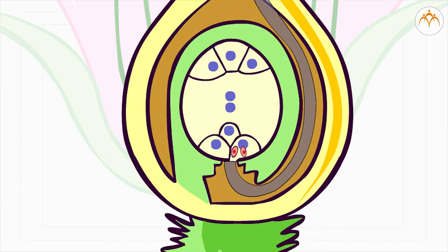One male gamete fuses with the egg cell to form the zygote. The second male gamete fuses with the polar nuclei to form the endosperm. As both nuclei are used and the event of fertilization occurs twice, this is called double fertilization. After fertilization, the zygote develops into an embryo. Ovules develop into seeds and the ovary develops into fruit.